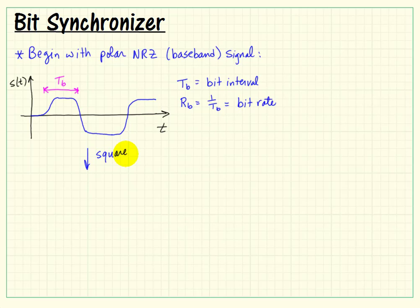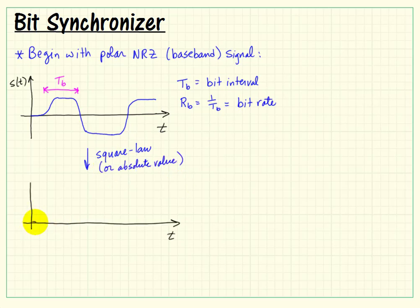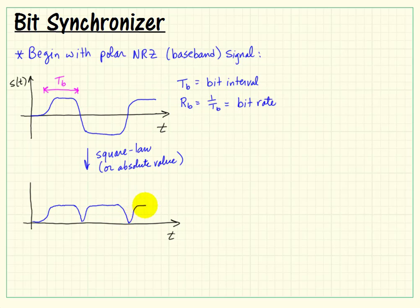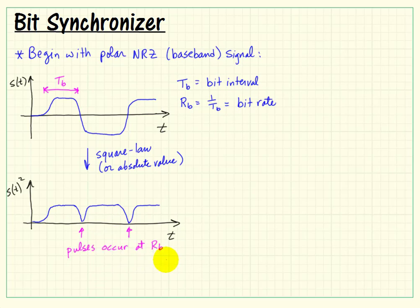First thing we do is apply a square law device, or you could use an absolute value. Either one works fine. The idea here is to flip all of the negative-going portions of the signal positive. Of course, that's already positive, so we leave that alone. The benefit for doing this is now we have a signal that has regular pulses that occur at our bit rate.